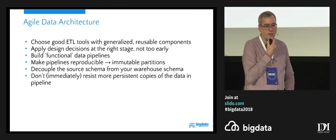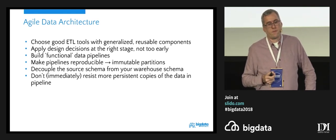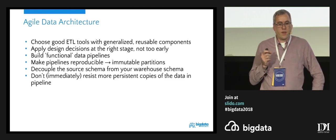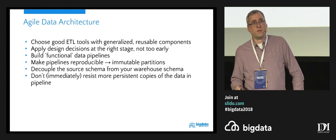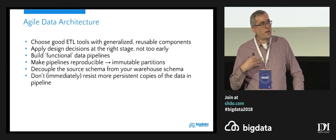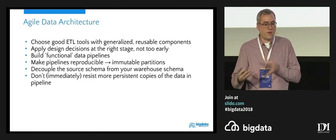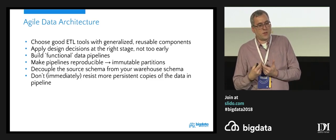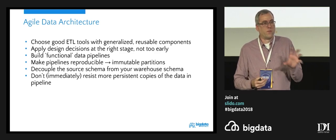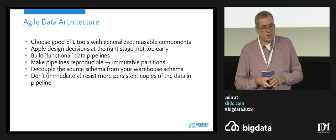The agile data architecture has some very important characteristics — if there's a key slide, this is probably the one. If you want to go towards the agile data architecture, one thing you need is to choose good ETL tools that have generalized, reusable components. You do not want to use components that already have a lot of your logic in them and application-specific things in them. You want to use those components in different pipelines, so they have to be generalized and abstract enough to solve the problem of that particular operation. Reusability is the key word.